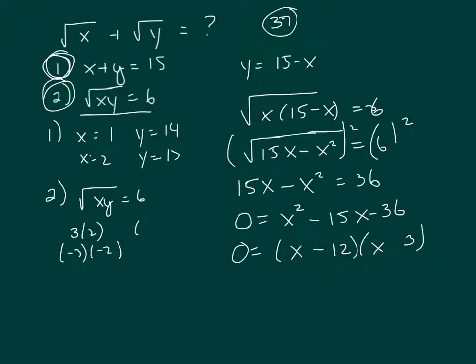And we want both of them to be what? That's positive 36. We want both of them to be negative. And that works. And then you set each one of these equal to 0. So you get x equals 12 and x equals 3.